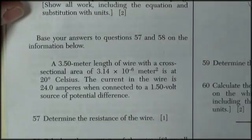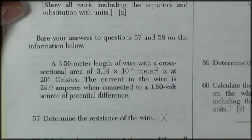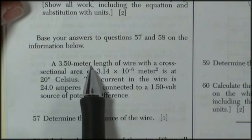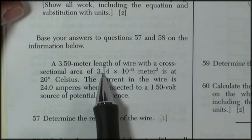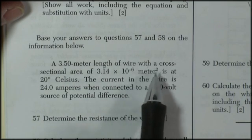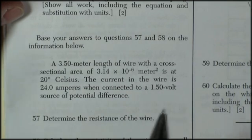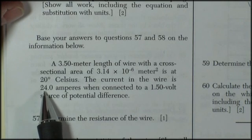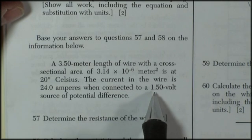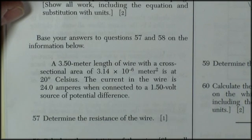Questions 57 and 58 pertain to this information. 3.5 meter length of wire, cross-sectional area of 3.14 times 10 to the negative 6 meters squared, is at 20 degrees Celsius. The current in the wire is 24 amps, connected to a 1.5 volt source. They want me to determine the resistance of the wire, and calculate the resistivity of the wire. So I'll work.